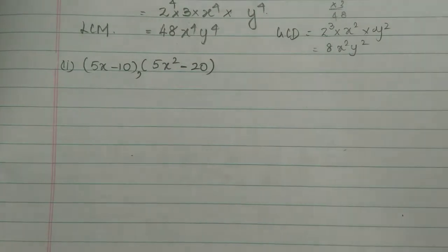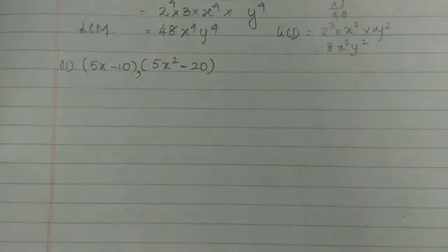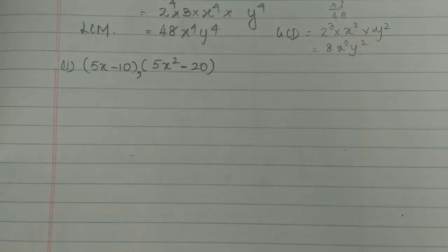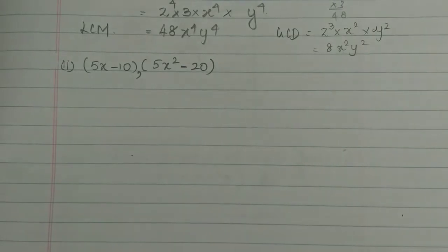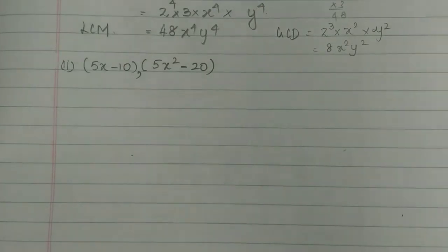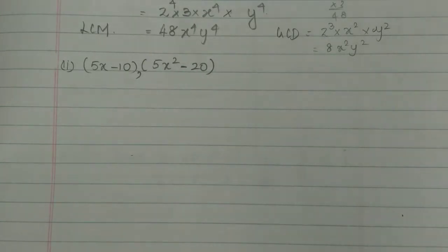If there is a quadratic equation, let's check if we can factorize it. We try the quadratic method and factorize the expressions to find their proportional factors. Let's check if 5 is a common factor.